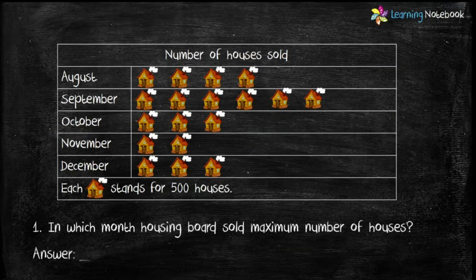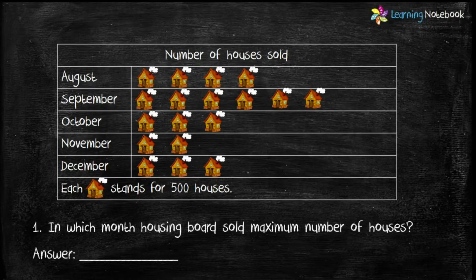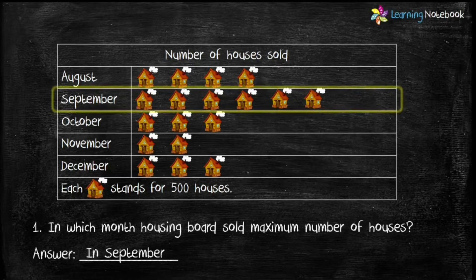Question one: in which month did the housing board sell the maximum number of houses? As you can see, the month of September has six pictures, so it means the maximum number of houses were sold in the month of September.